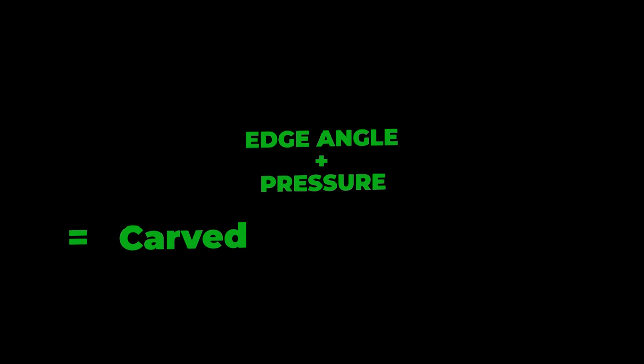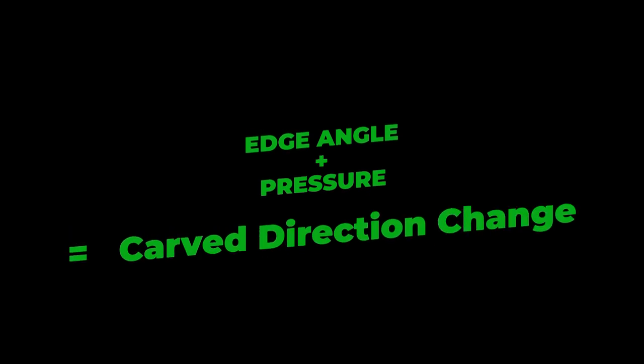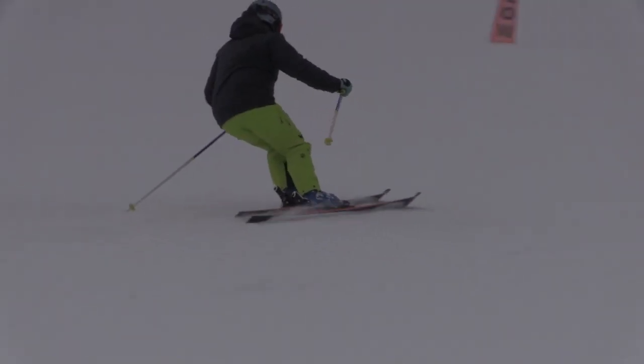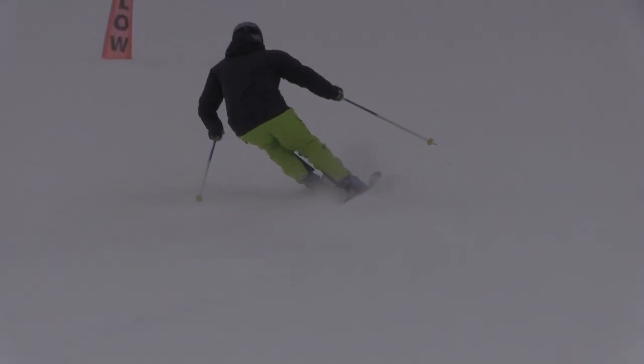Two key ingredients are required for a carved arc. We need the ability to tip the ski onto its edge and manage pressure so the ski bends to create a direction change.